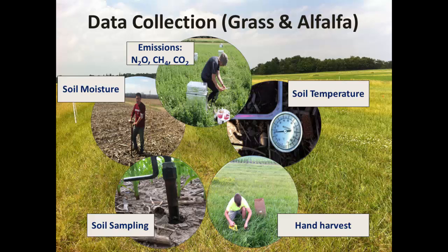We collected samples very similarly to our corn study. In one round of alfalfa, we had to use an extender as shown in the picture, and we added a time-60 for flux measurements. We monitored soil moisture and soil temperature as we did in corn. Soil samples were taken at each cutting, and we hand-harvested the crops.